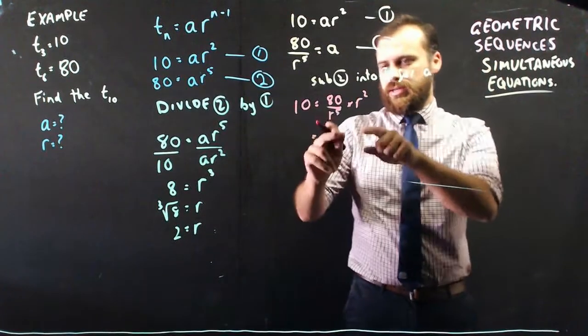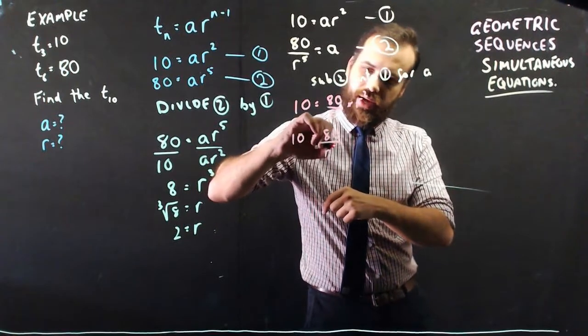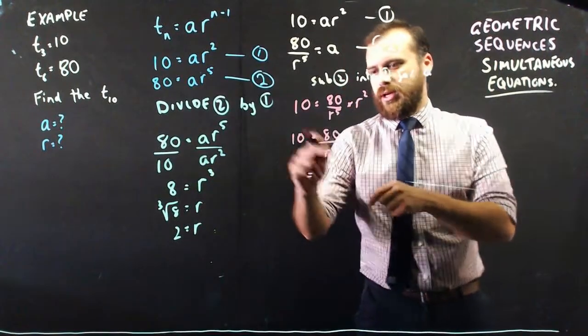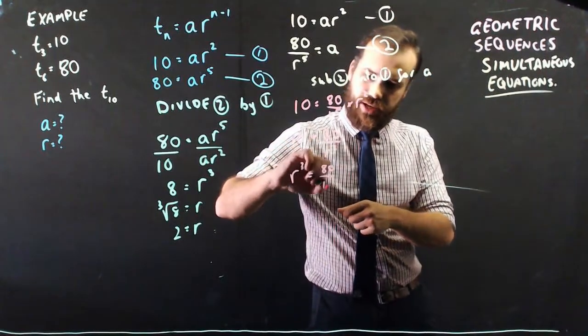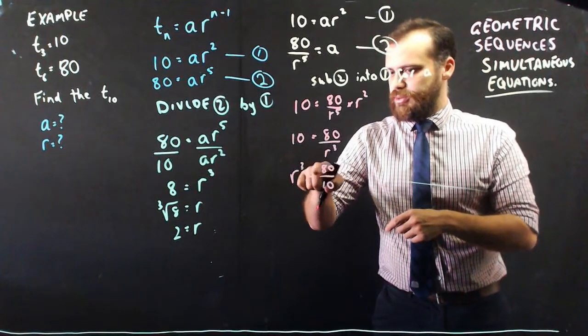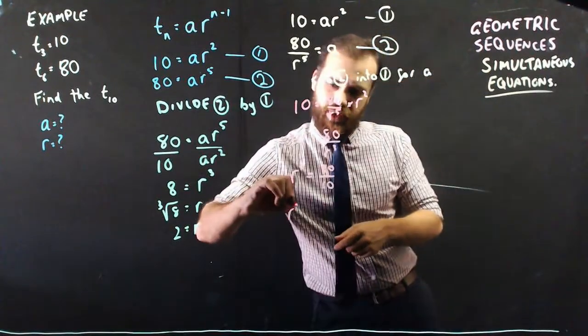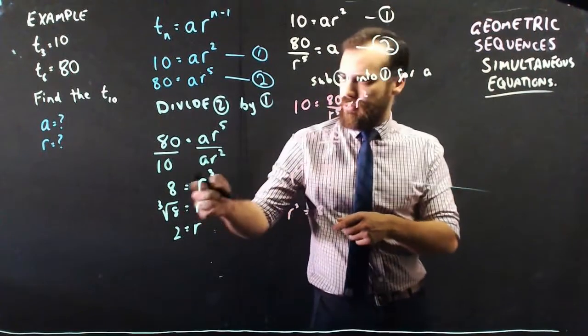That's going to give me 10 equals 80r^3. I can move r^3 to the top using cross multiplication. We end up with 80 over 10. And you should see that r^3 equals 80 over 10. r^3 equals 8, which means r equals 2.